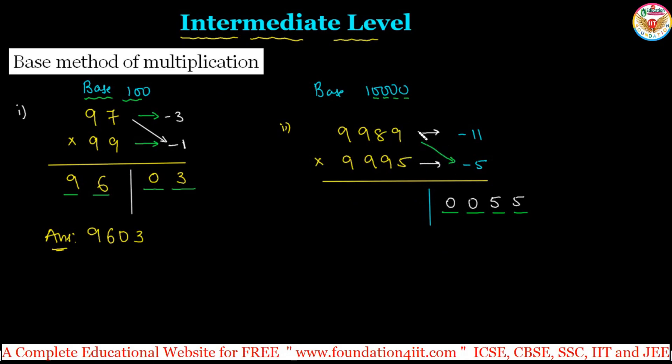11 into 5 is 55, so two more zeros you can fill in this place. Second step is cross-way you can subtract, which is easy. 9,989 minus 5 is exactly equal to 9,995 minus 11. So 9,989 minus 5, that's all. The answer is 99840055. This is the multiplication answer for 9,989 into 9,995.